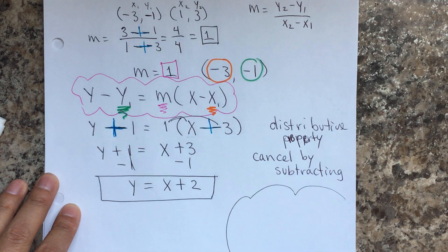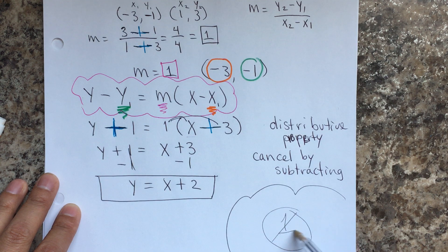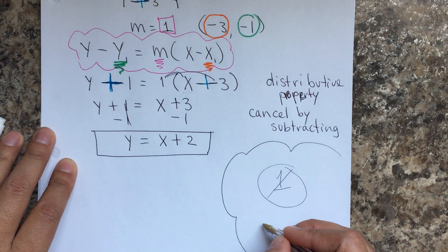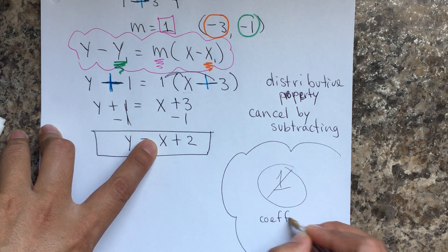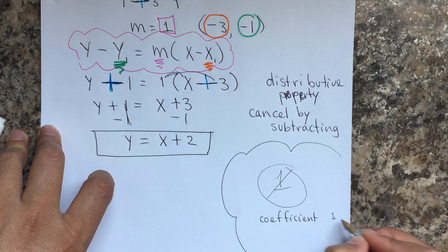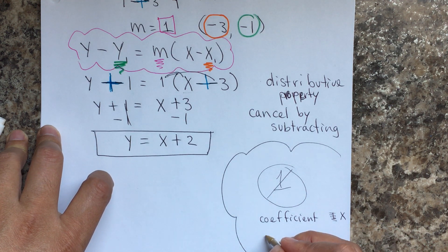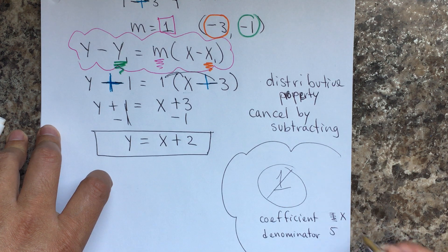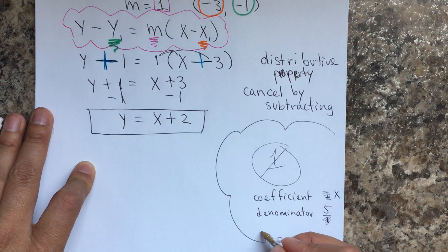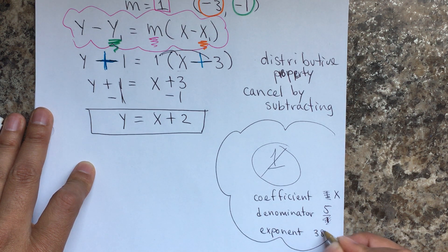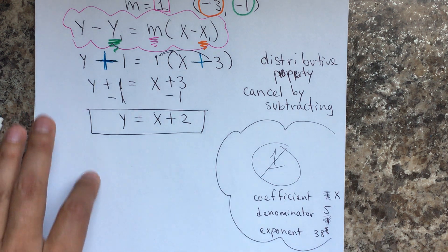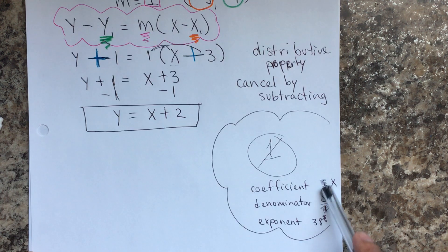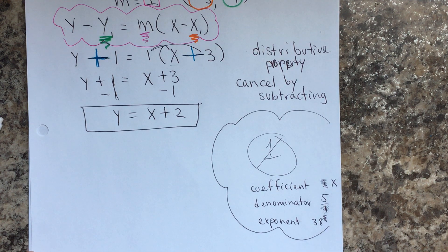The 1 is not used as a coefficient — meaning you don't write 1x. We also don't use it as a denominator: if you have 5, we don't put 5 over 1. And we also don't use it as an exponent. So basically, x is always x by itself — we don't put 1 as coefficient, denominator, or exponent.